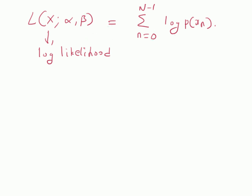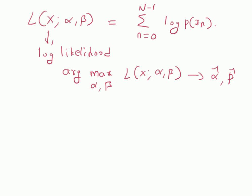This log-likelihood of the N variables is given by this summation. Now we can determine the parameters alpha and beta as the argument that maximizes L(x; alpha, beta) with respect to alpha and beta, which will give us the optimal estimates alpha-hat and beta-hat. For example, to find the maximum likelihood estimate of alpha, we equate the partial derivative of the log-likelihood function with respect to alpha to zero.